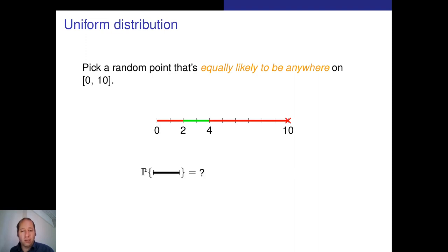And since my point is random and equally likely to be anywhere, all I need to do is just compare the length of the interval. So the answer is the length of the interval from 2 to 4, which was my question, over the total length from 0 to 10, so 2 over 10 or 1 fifth.